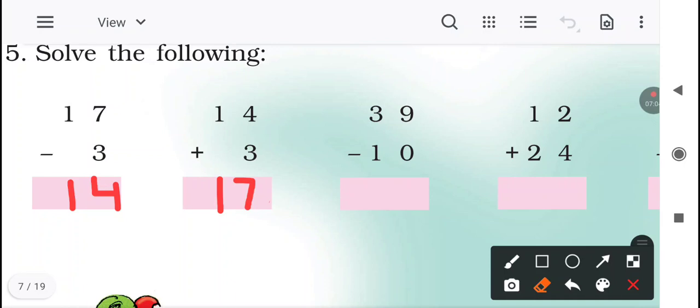Next. Minus is there. 39 minus 10. 9 minus 0 is equal to 9. We know the property of subtraction - if we subtract 0 from any number, the answer will be the number itself. So 9 minus 0 is equal to 9. 3 minus 1 is equal to 2. Now next is addition. 12 plus 24. 2 plus 4 is equal to 6. 1 plus 2 is equal to 3. Answer is 36.